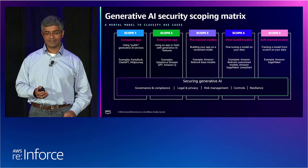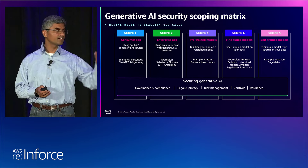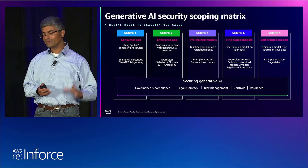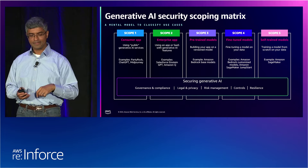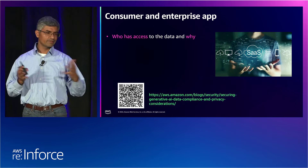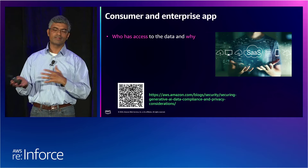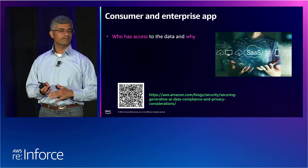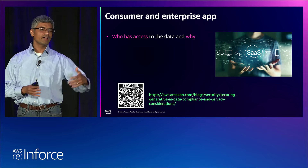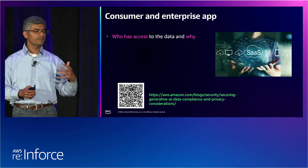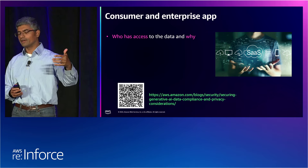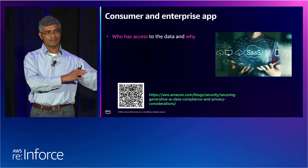Now with that scoping matrix in mind, let's turn our attention to data privacy considerations across these different scopes. At the end of the day, when you're analyzing an application for data privacy considerations, you have well-established practices — things like data classification and privacy audits — that you'll apply to any application. The fact that it happens to be a generative AI application is not all that different; it just has functionality that uses machine learning and language models or image models to generate new content. The data privacy considerations remain the same to a very large extent.